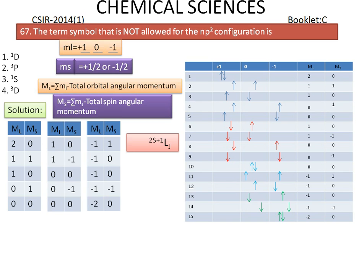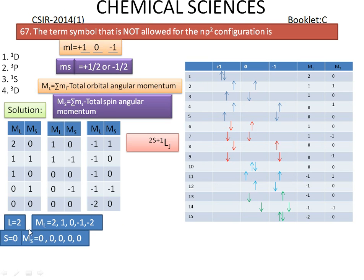We obtain 15 microstates in total, tabulated with their capital ML and MS values across three groups of five. The largest ML value is 2, with a corresponding MS value of 0. For this state, L = 2 and S = 0. The possible combinations of ML and MS are shown, and the corresponding term symbol is 1D.